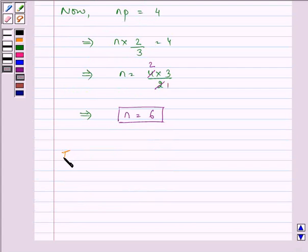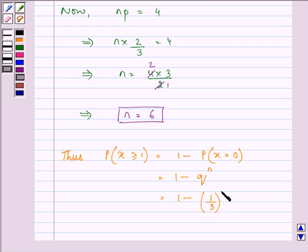Thus, we can write down that probability when X is greater than or equal to 1 is equal to 1 minus probability that X is equal to 0, which is 1 minus q raised to the power n. Now, we know the value of q as 1/3 and the value of n as 6.